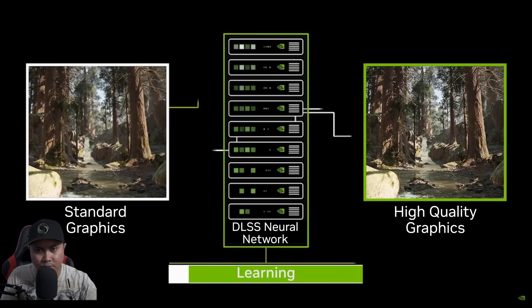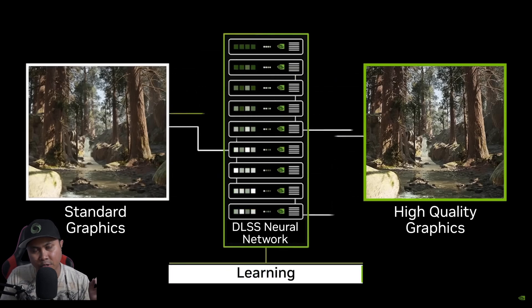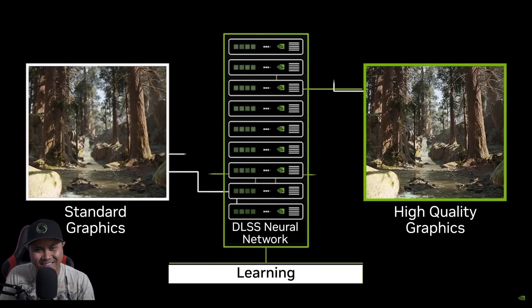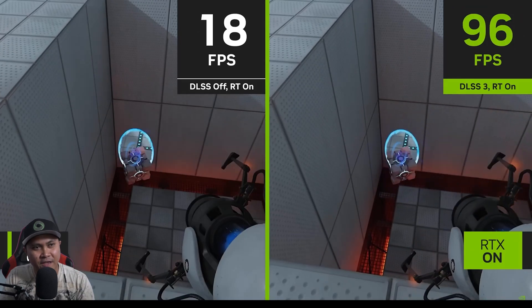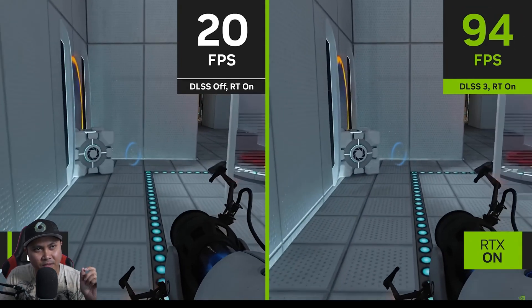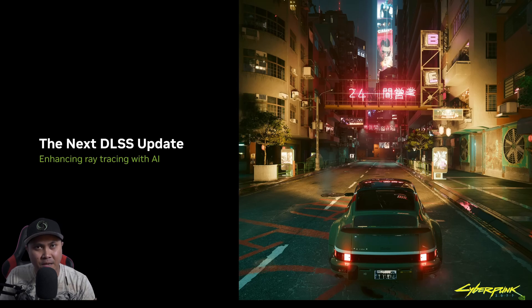So DLSS 3.5 without frame generation is available on all RTX GPUs. As amazing as that sounds, I'm pretty sure a lot of people are going to be complaining about this — they always do. One of the arguments that's going to come out of this is: why should we have to buy an NVIDIA card to get fake frames? This is the biggest argument right now with DLSS 2 and 3 — why pay extra money to get fake frames?